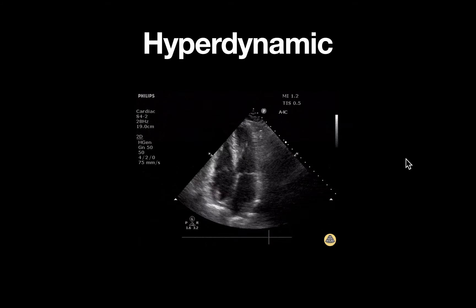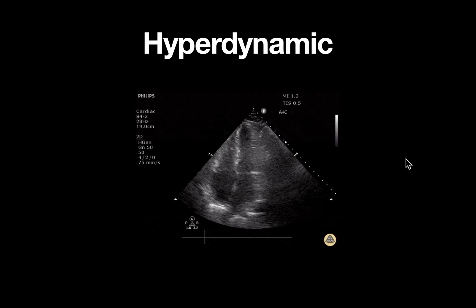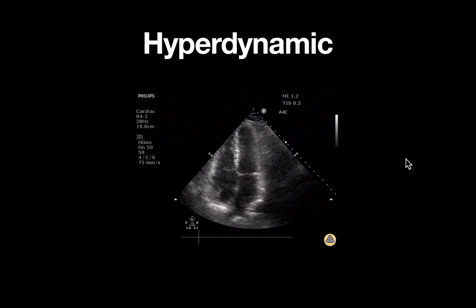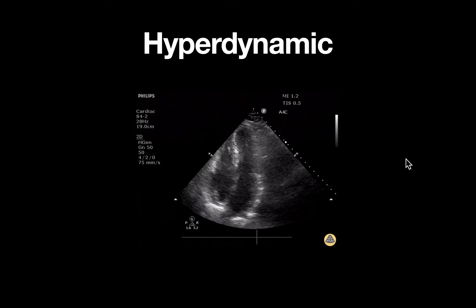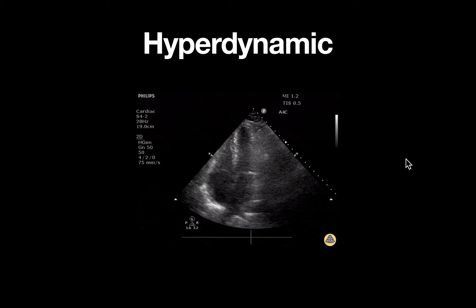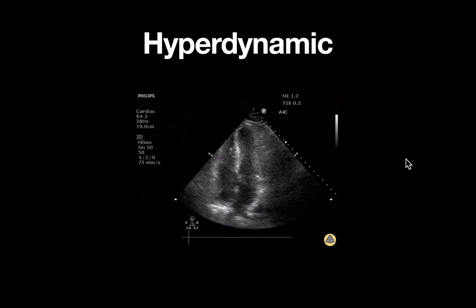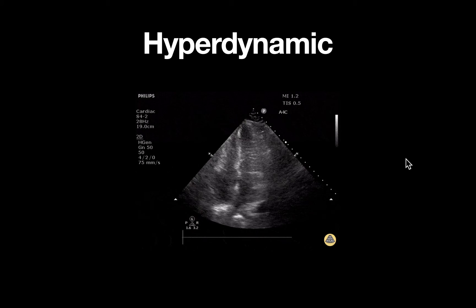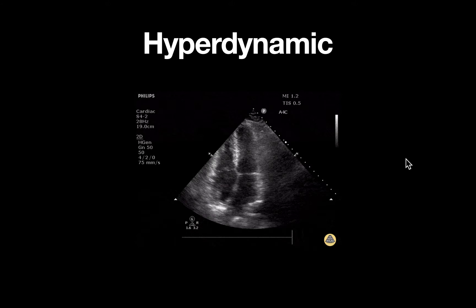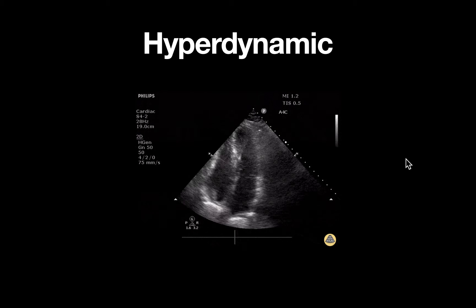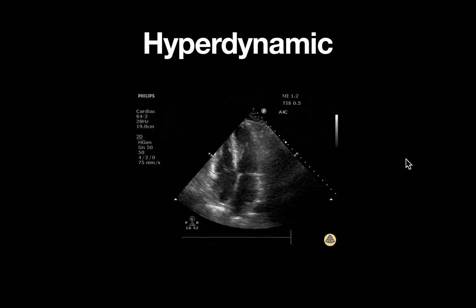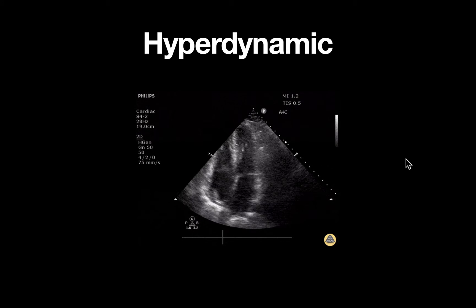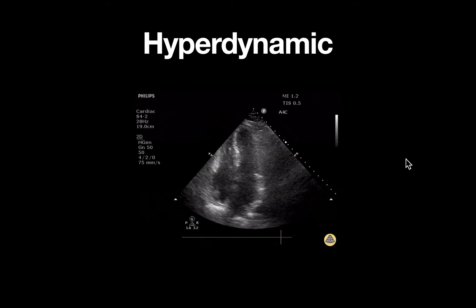This is an apical four-chamber view of a hyperdynamic left ventricle in a patient presenting to the emergency department with hypotension and fever. A phased array probe is used and placed at the point of maximal impulse, usually just below the left nipple or at the inframammary fold, with the probe marker pointed towards the left axilla.